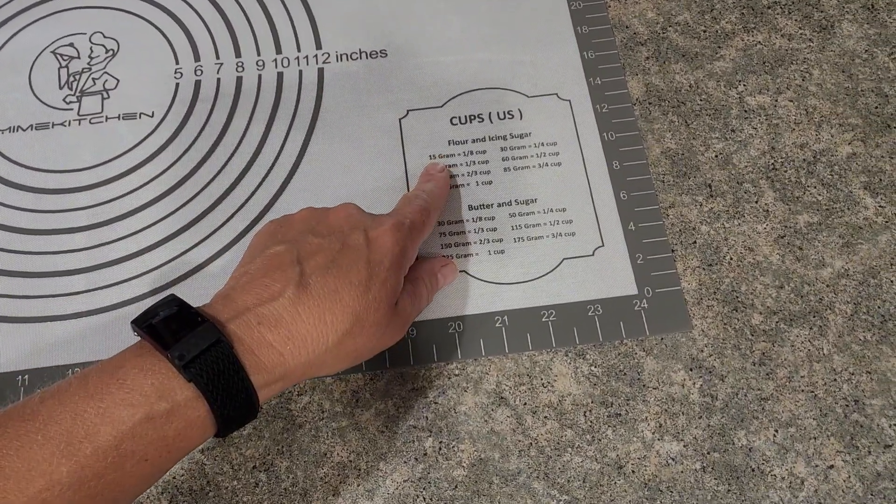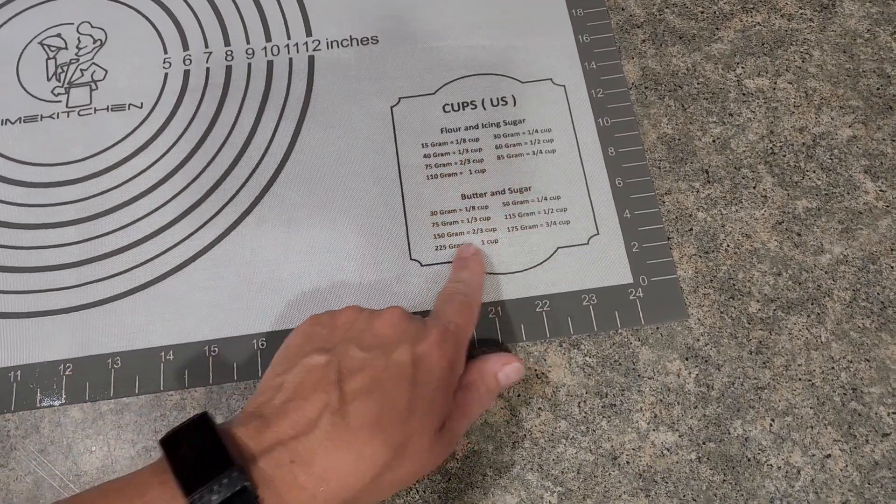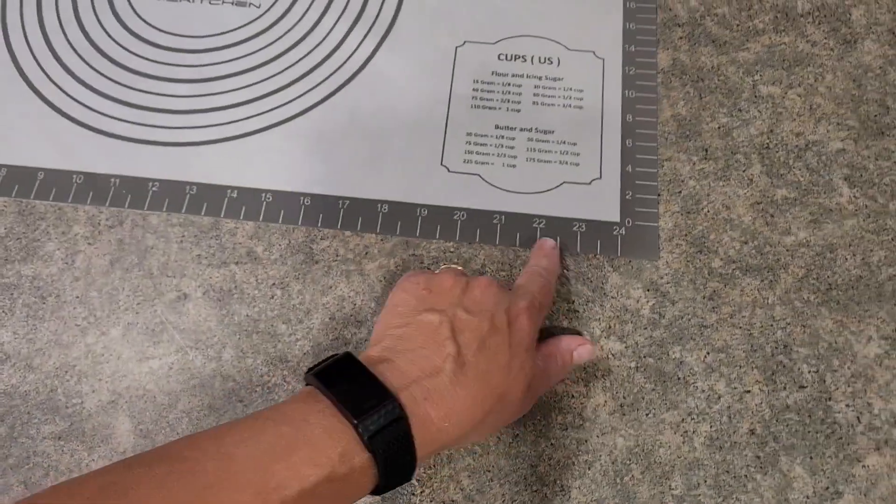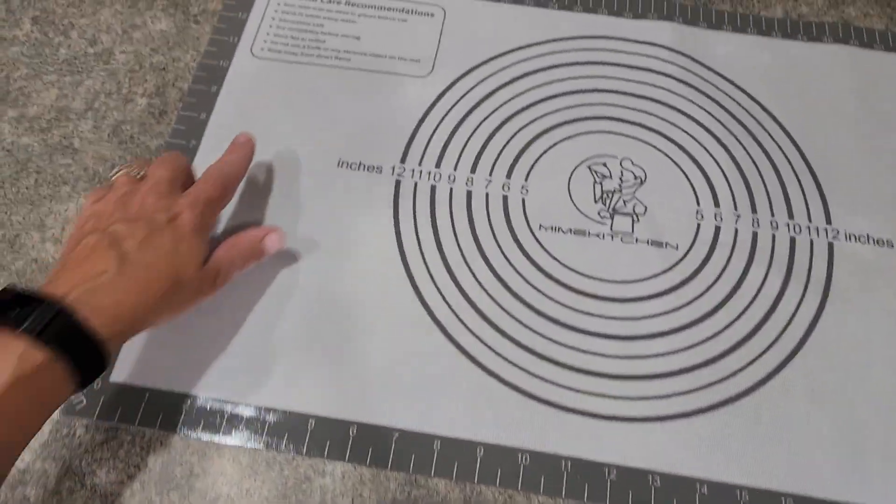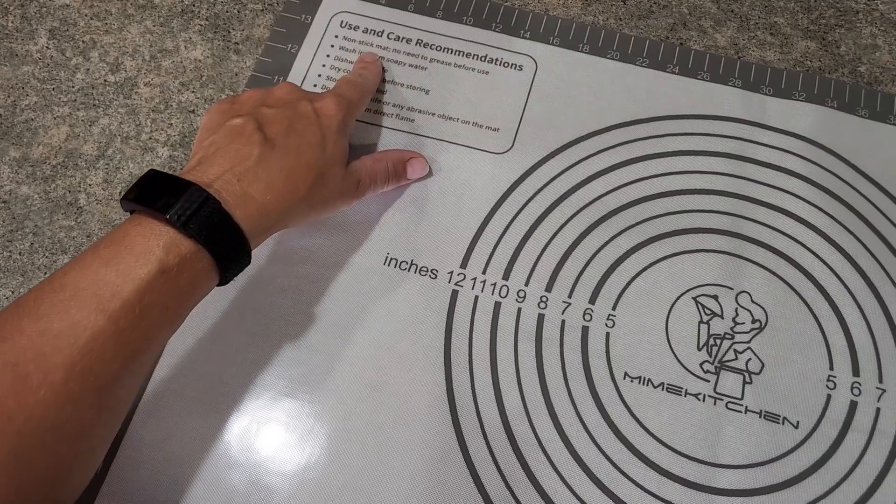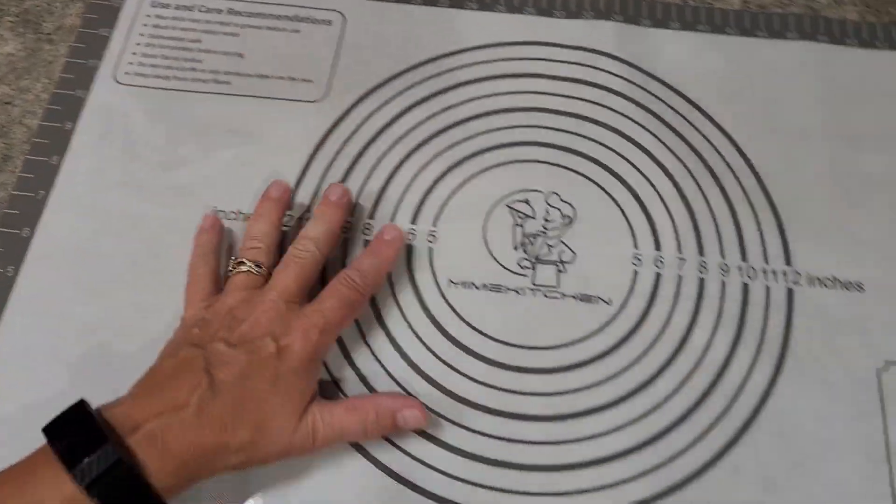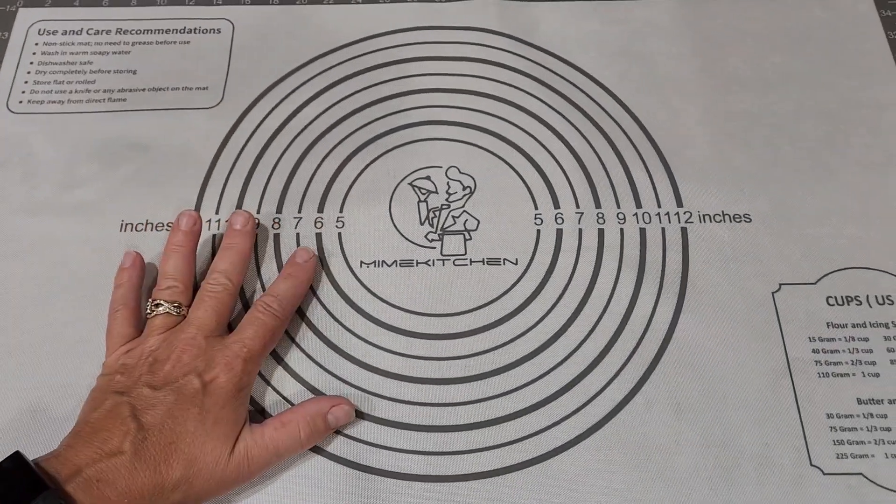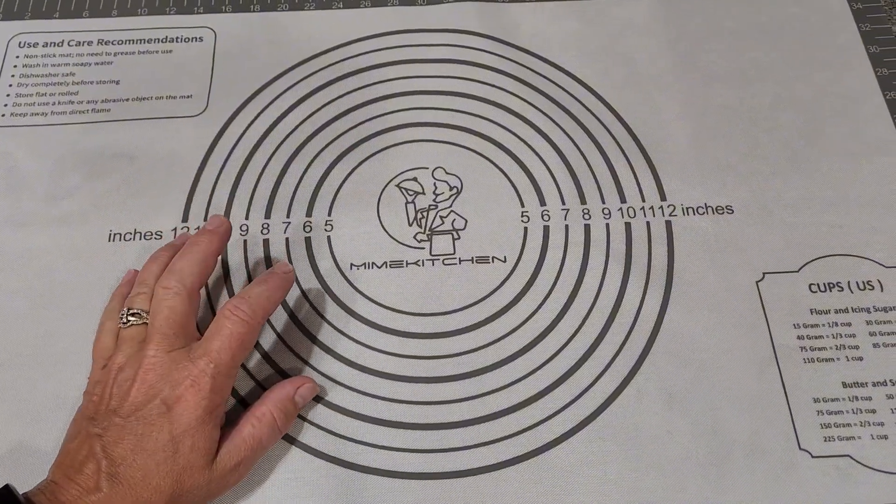You can see on the outside edge you have the cutting measurements as well, and then use and care instructions. It's a nonstick mat, and that's what I love about this. When I'm making my pie crust, pizza crust, things like that, I can use so much less flour on this mat.